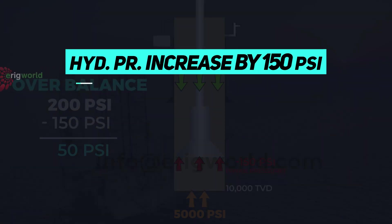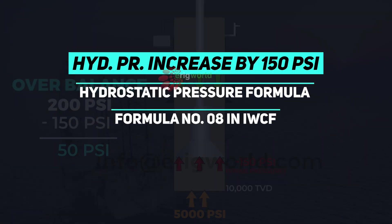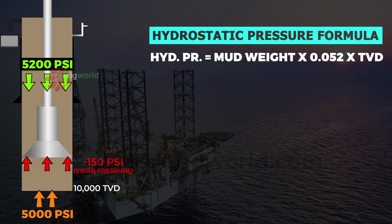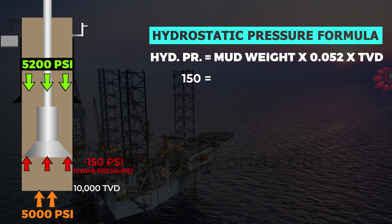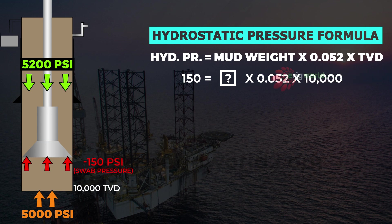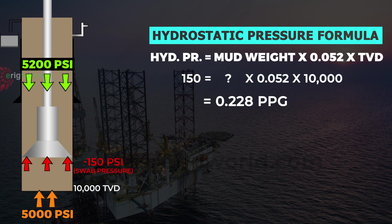Hydrostatic pressure must be increased by 150 psi using the hydrostatic pressure formula, or you can use formula number 8 — the IWCF trip margin formula. Using the hydrostatic pressure formula: 150 psi is the pressure increase needed, the depth of the wellbore is 10,000 feet, multiplied by the constant. Solving this equation gives 0.288 ppg, which is the trip margin.